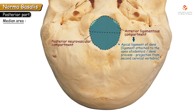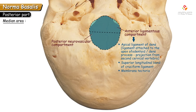In the anterior ligamentous compartment, we find the apical ligament of the dens — the ligament attached to the apex of the odontoid process (dens) of the second cervical vertebra (axis). Also present are the superior longitudinal band of the cruciform ligament and the membrana tectoria.